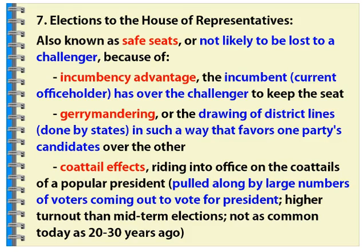Coattail effects also play a role, though not as stark as we used to see. We did see Senate races hinge on Donald Trump getting out the vote in places like Pennsylvania and Wisconsin, where Pat Toomey and Ron Johnson won their Senate races propelled by the Trump vote on Election Day. The coattail effect definitely has an impact, though we saw a lot more of that 20-25 years ago than in most races today.